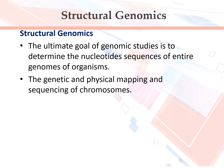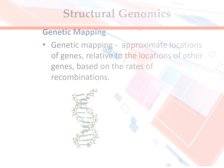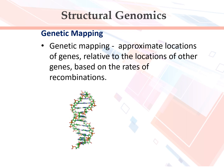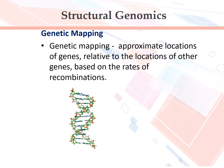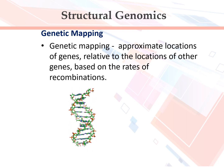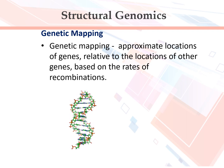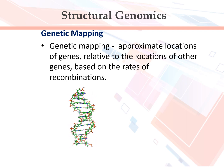The genetic and physical mapping and sequencing of chromosomes. Genetic mapping identifies approximate locations of genes relative to the locations of other genes, based on the rates of recombinations.